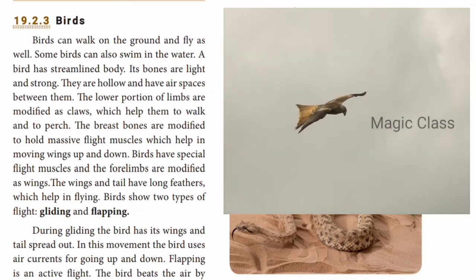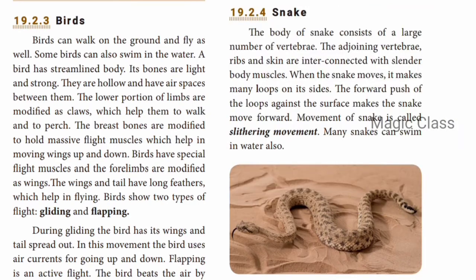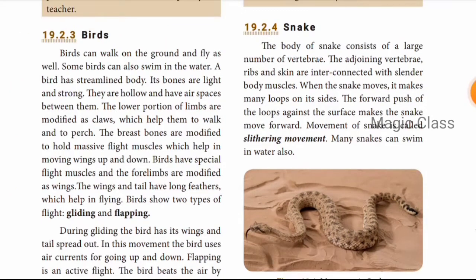Birds can walk on the ground and fly as well. Some birds can also swim in water. A bird has a streamlined body. Its bones are light and strong, and they are hollow with spaces between them — this helps reduce weight for flight. The lower portion of the limbs are modified as claws which help them to walk and to perch.